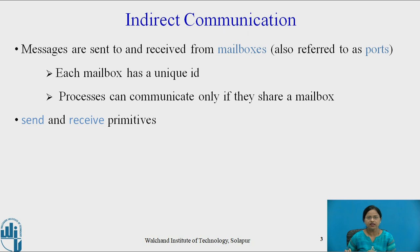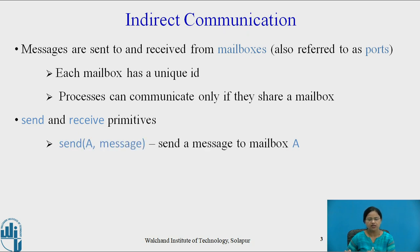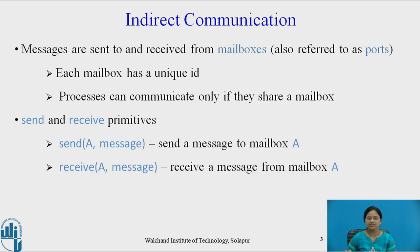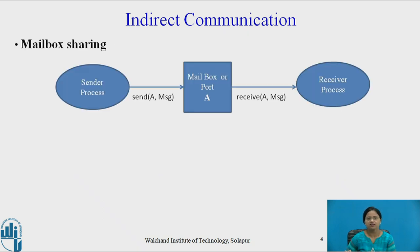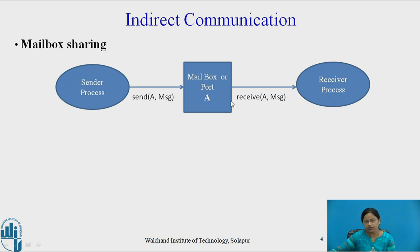In indirect communication, send and receive primitives are used. The send primitive is send(A, message), meaning send a message to mailbox A. And receive(A, message) means receive a message from mailbox A. So in mailbox sharing, the sender process sends a message to a particular mailbox A, or port A. This is indirect communication.